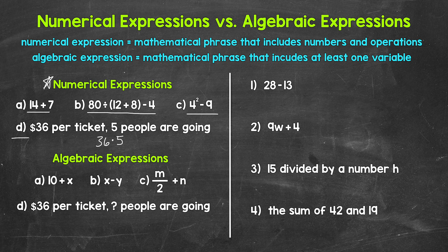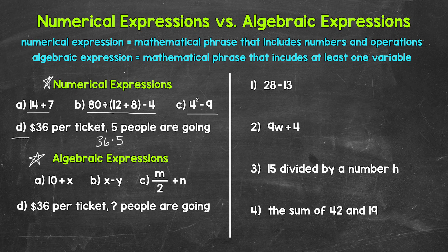Now, algebraic expressions include at least one variable. So they have one or more variables, along with any numbers and operations. And remember, a variable represents an unknown value. And variables are symbols, usually letters, that hold the place of those unknown values. So here are some examples of algebraic expressions.